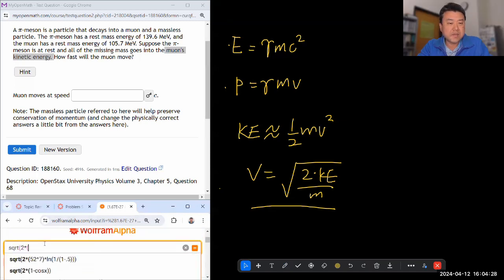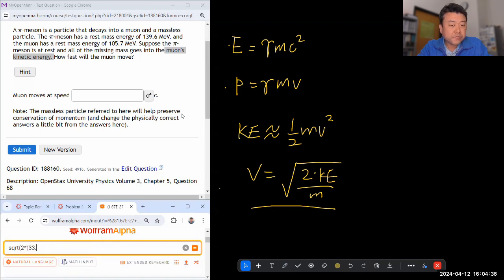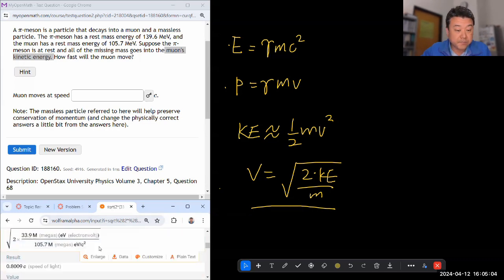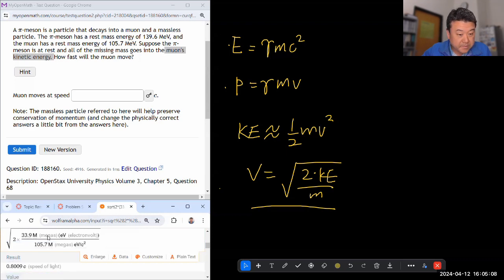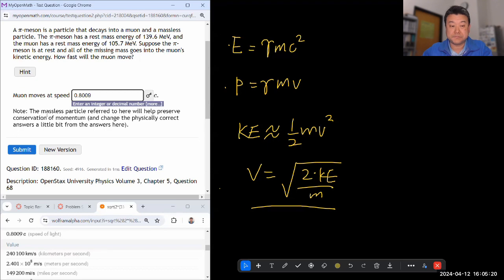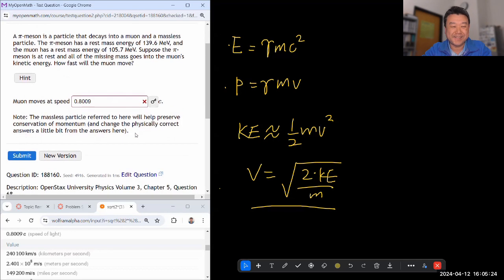So I say square root of two times kinetic energy will be difference of energies there. I can say that that's 33.9 MeV or mega electron volts divided by mass of the muon, which will be 105.7 mega electron volts divided by c squared. That's what I mean, electron volt unit. So I think that's everything. Hopefully we get something in unit of meters per second. 0.8009c, maybe that's correct. No, it's not graded as correct.